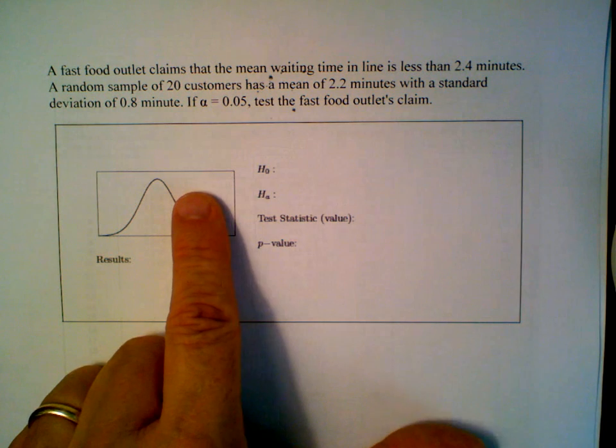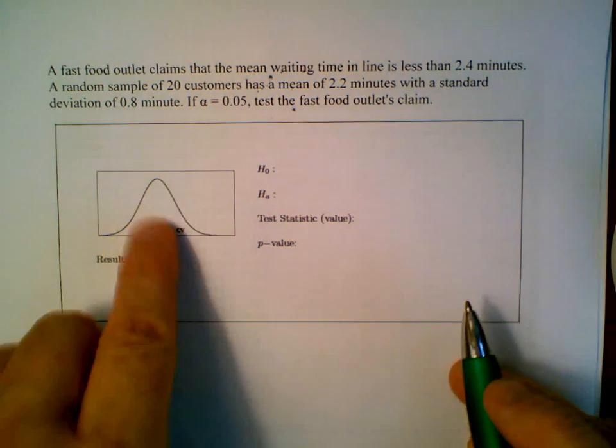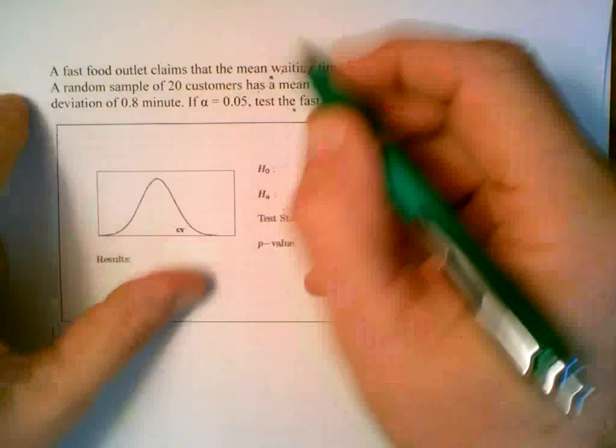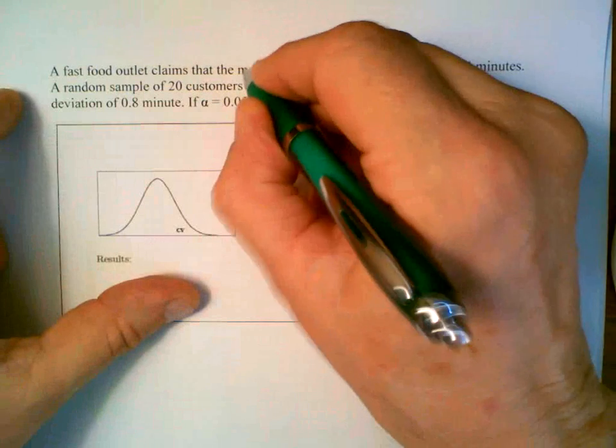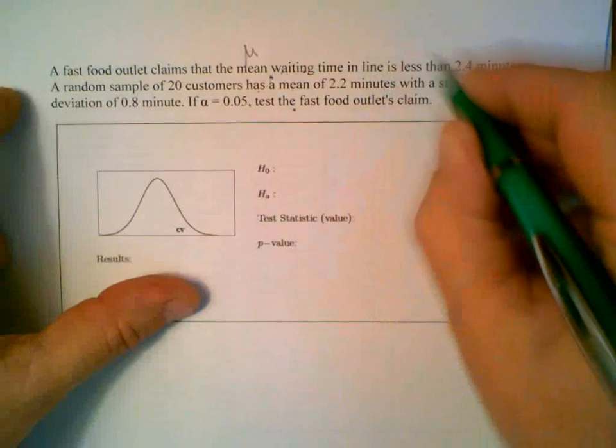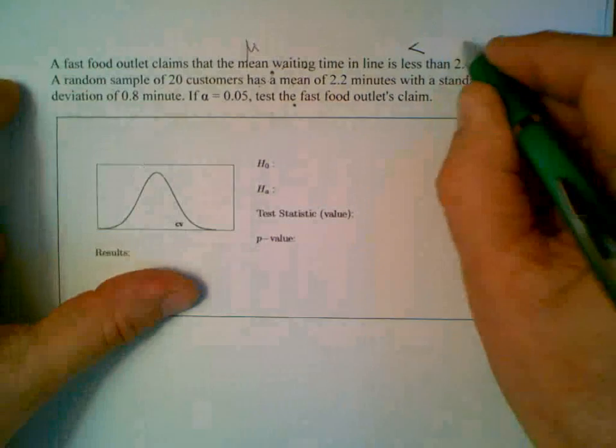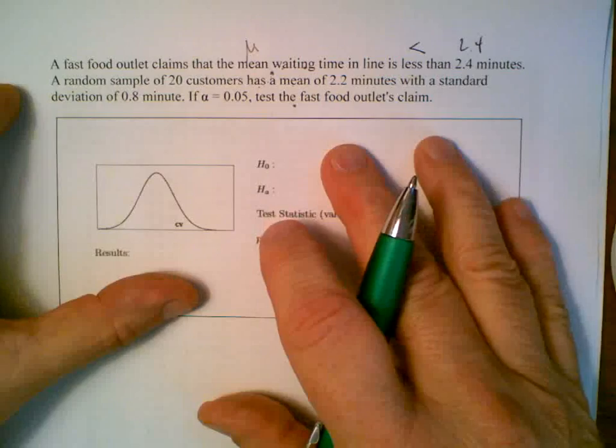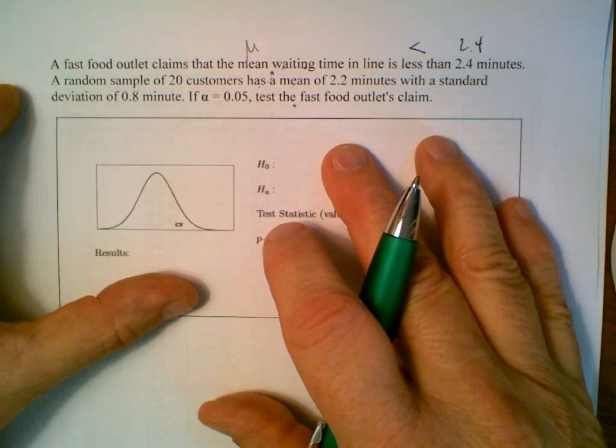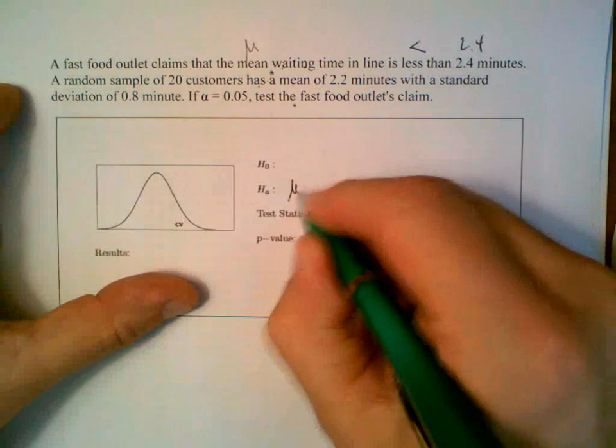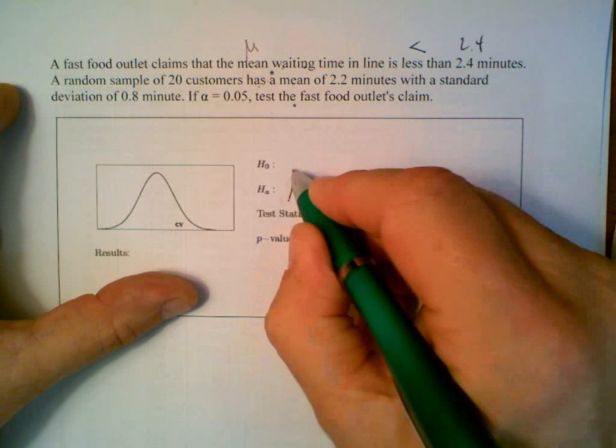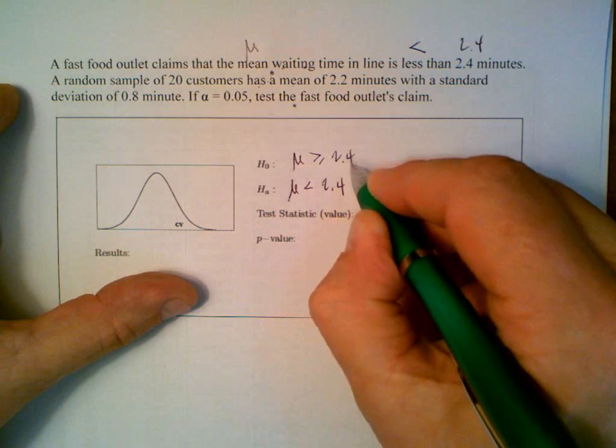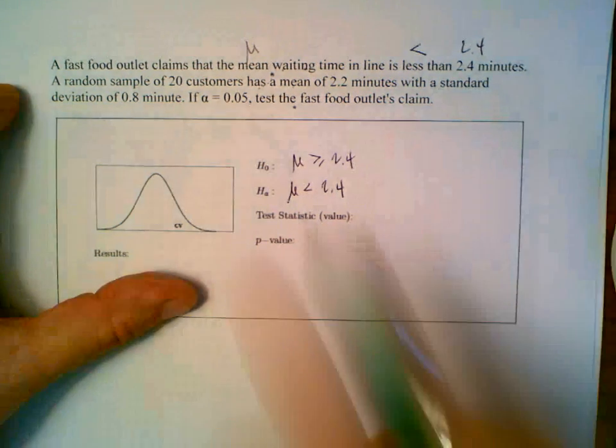Well this is laid out for us real nice. First of all we notice that there are 20 customers so that makes it a t-test. Second, we see that they're telling us that the mean is less than 2.4. That's the alternate hypothesis right there. Mu less than 2.4, so the null hypothesis is mu greater than or equal to 2.4.